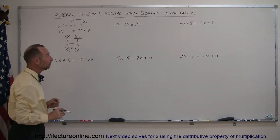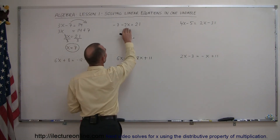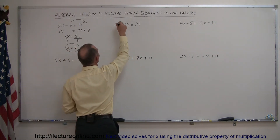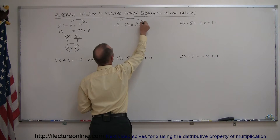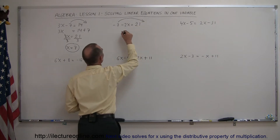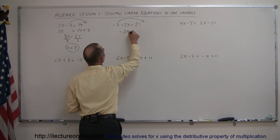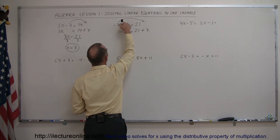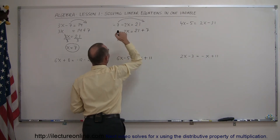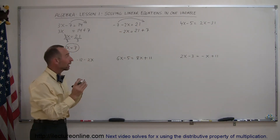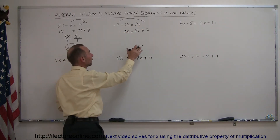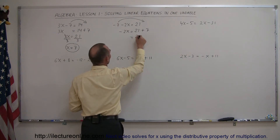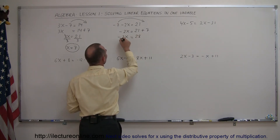Our next example: we do the same thing. All terms that have an X stay on the left; any terms that do not have an X go to the right. So this becomes minus 2X equals 21 plus 7. Remember, when we cross the equal sign the sign changes. Now we combine like terms on both sides: 21 plus 7 equals 28, so we have minus 2X equals 28.